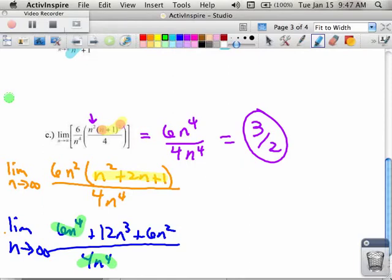So rule number 1, if the exponents are the same, you just divide the coefficients. Rule number 2, big on bottom, you're going to 0. Rule number 3, big on top, you're going to some kind of an infinity.